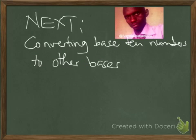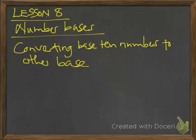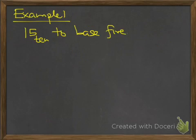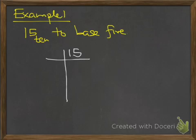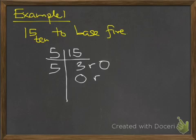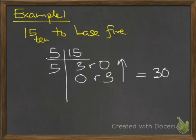Next we are going to look at converting base 10 numbers to other bases — lesson 8, number bases. Example 1: convert 15 base 10 to base 5. We divide by the value of the base. 5 into 15 is 3 remainder 0. 5 into 3 is 0 remainder 3. We read upwards, so the answer is 30 base 5.